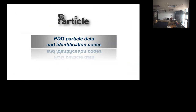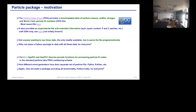Starting with the Particle package, which is centered around the Particle Data Group particle data and identification codes. The PDG provides a downloadable table with particle masses, widths, charges, and Monte Carlo PDG IDs. They also provide an experimental file with extended information such as quark content and various other properties, but only until late 2018. Anyone wanting to use this data would have to parse it programmatically themselves — so why not make something professional, efficient, and versatile for everybody?